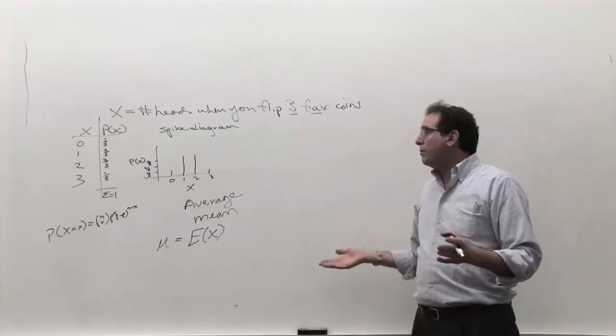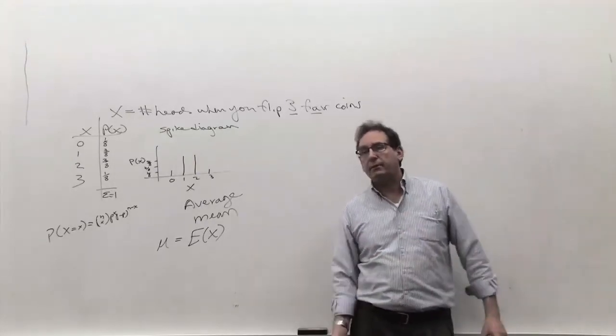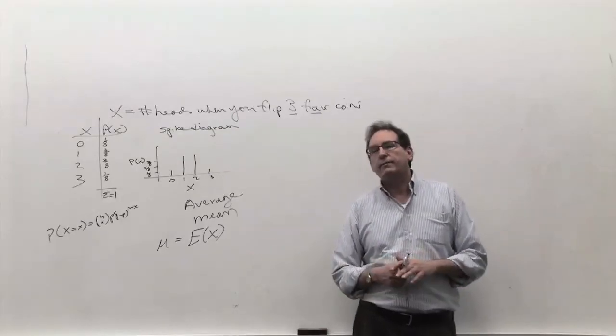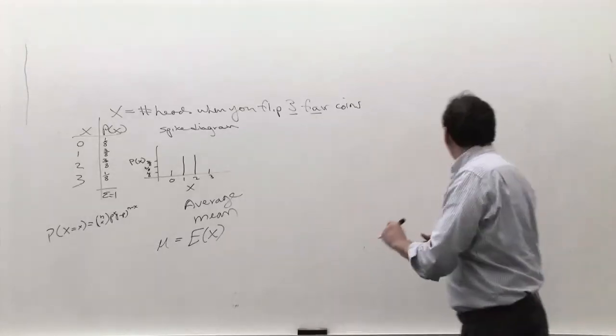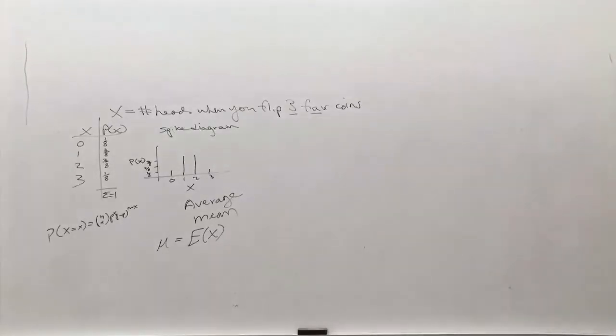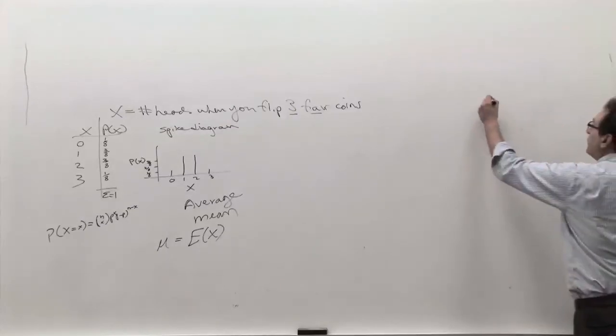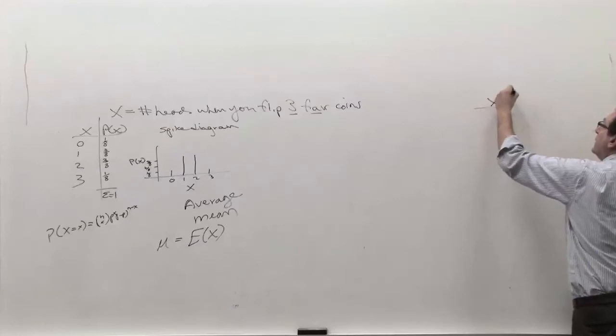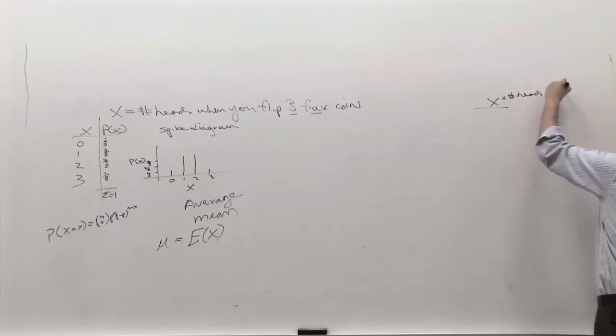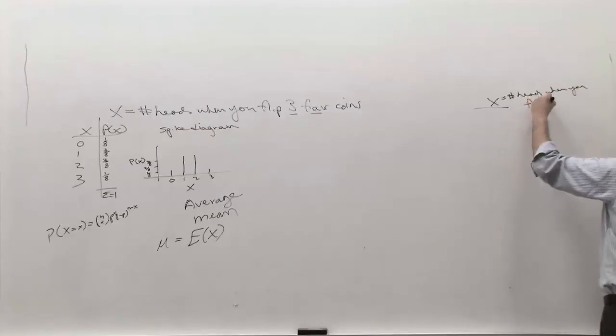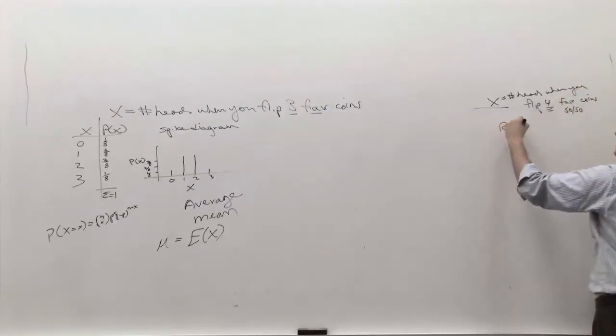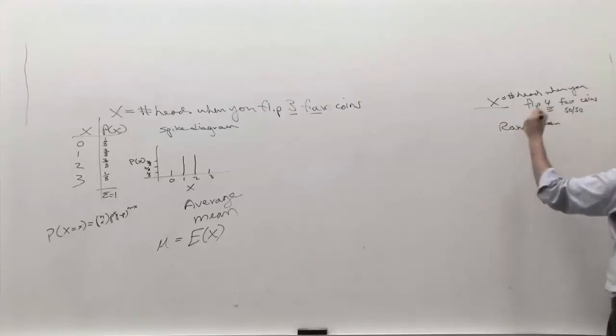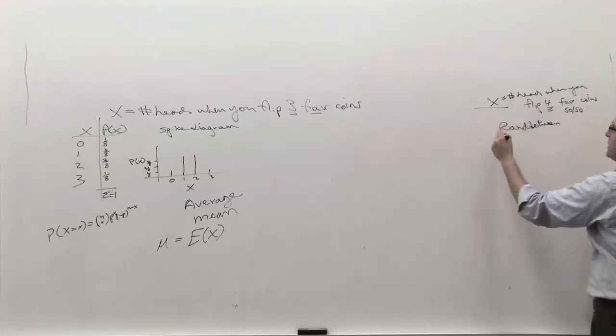Now, before I show you a formula for it, or another way of getting the answer, could somebody guess the answer? If you're flipping three coins, how many heads are you going to get on the average? Let's take a simple example. You're flipping four coins, some heads, some tails. Let's say you did four coins. In fact, you were supposed to do this for today's spinner assignment. We'll find out if anybody did it. You actually flip X equals number of heads when you flip four, not three, still fair, meaning 50-50, coins.